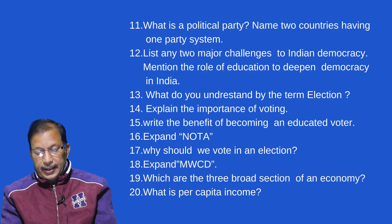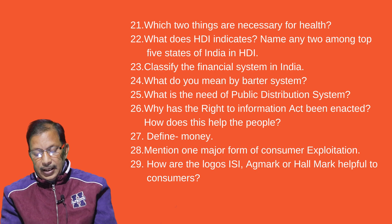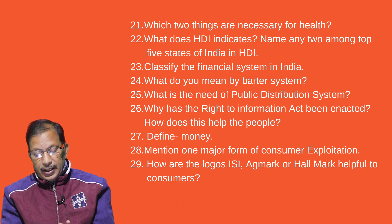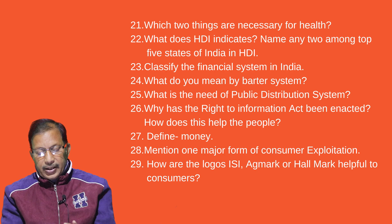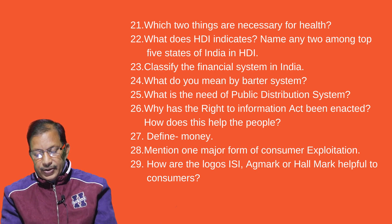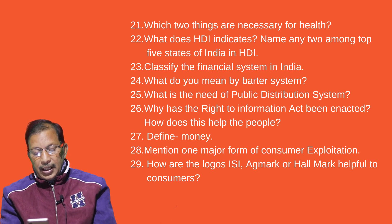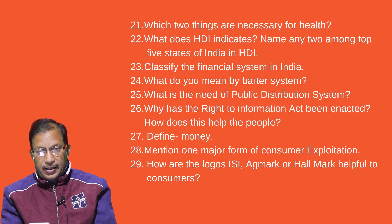What is per capita income? Which two things are necessary for health? What does HDI indicate? Name any two among the top five states of India in HDI. Classify the financial system in India. What do you mean by the barter system? What is the need for the Public Distribution System? Why has the Right to Information Act been enacted and how does it help people?